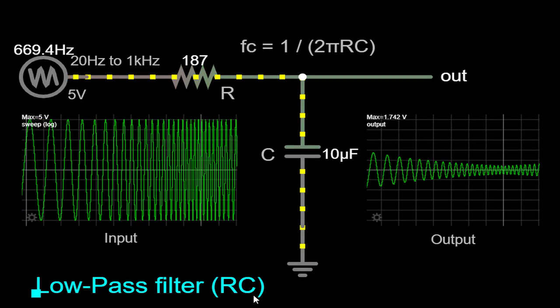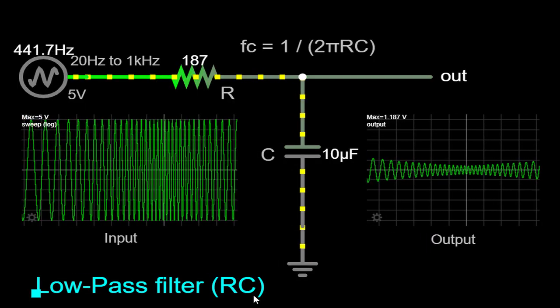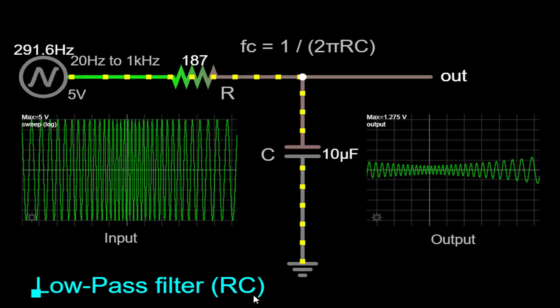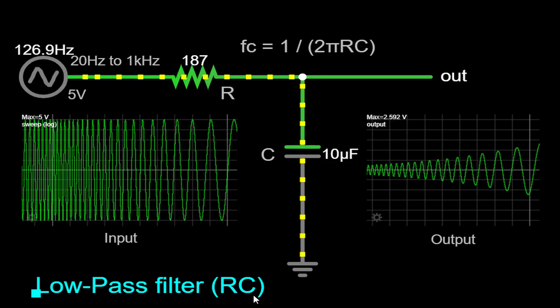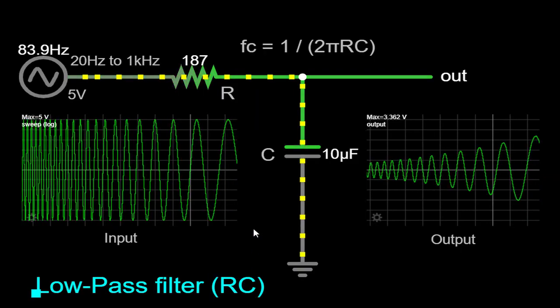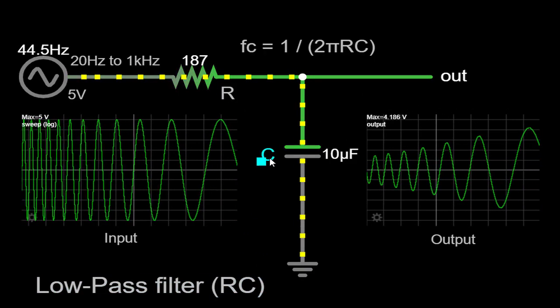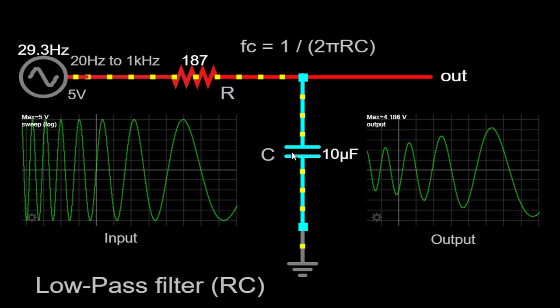An RC (resistor capacitor) low-pass filter is a type of electronic filter that allows low-frequency signals to pass through while attenuating higher-frequency signals. It consists of a resistor R and a capacitor C connected in series or in a voltage divider configuration.